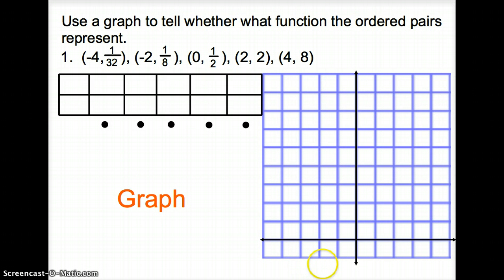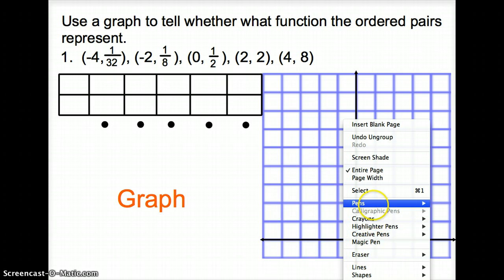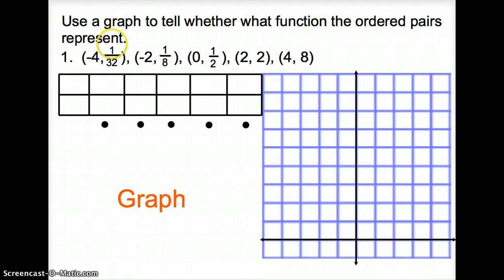Next, we are going to graph these coordinate points and state if they are linear, exponential, or quadratic function. So the first thing we have to do is plot these points in a table. I'm going to go x, y. Remember, the first coordinate is your x coordinate, the second is your y coordinate. So I'm going to plot these in a table. So it's going to be negative 4 and then that corresponds with 1 32nd, negative 2 and 1 8th, 0 and 1 half, 2 and 2, 4 and 8.